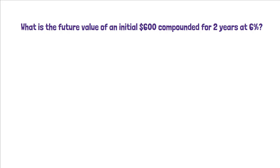Here is an example. What is the future value of an initial $600 compounded for 2 years at 6%? Let's use TVM formula first.